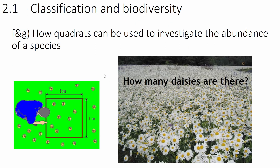And that's it for this part of the specification. Next time we're going to move on to how we start sampling areas for biodiversity, specifically looking at something called a quadrat and how we can use these to investigate the abundance of a species in an area. We might even have a go at answering how many daisies are in this picture — and I'll give you a hint: we are not going to count them individually.